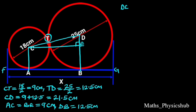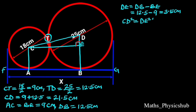DE equals DB minus BE, that is 12.5 minus 9, which is 3.5 cm. Since triangle CDE is a right angle triangle, we are going to use Pythagoras' rule to find CE. From Pythagoras' rule, CD² equals DE² plus CE². Since CD is 21.5 and DE is 3.5, substituting these values gives 21.5² equals 3.5² plus CE².